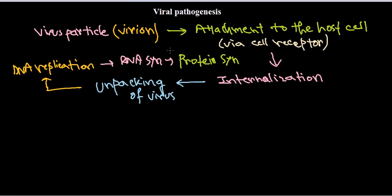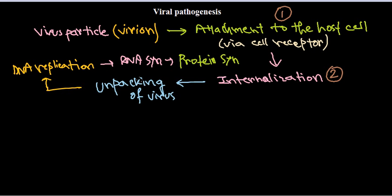Welcome back. We have already talked about the basic overview of how viruses cause pathogenesis inside the host cell. In this video, we'll be talking about each of these steps carefully. There are four different steps: first is virus particle attachment to the host cell, second is internalization, third is unpacking of the virus particle, and the fourth is protein synthesis and expression.